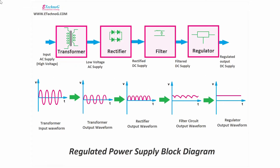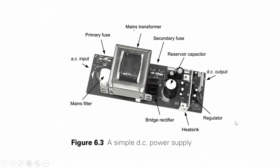To summarize the block diagram of DC power supply: the first stage is a step-down transformer — input is high voltage AC and output is low voltage AC. The second stage is a rectifier, shown here as a bridge rectifier with four diodes, converting low voltage AC to unsmoothened rectified DC. The third stage is a filter circuit with a capacitor that produces a filtered DC output via charging and discharging. The fourth stage is the voltage regulator using a zener diode, converting unregulated filtered DC to regulated DC output with a constant voltage over time.